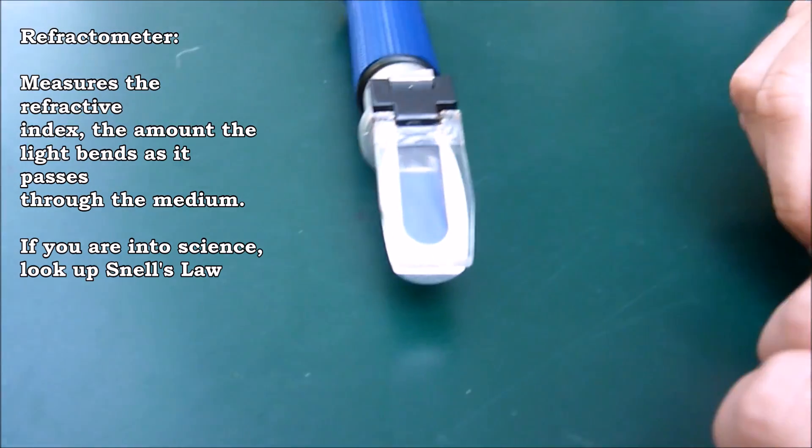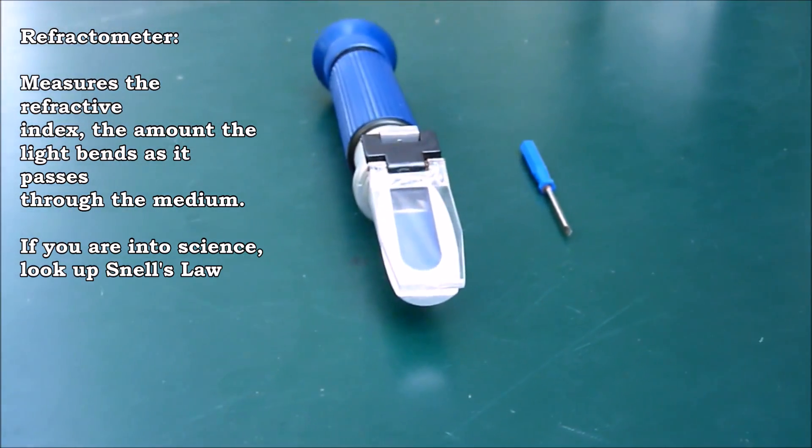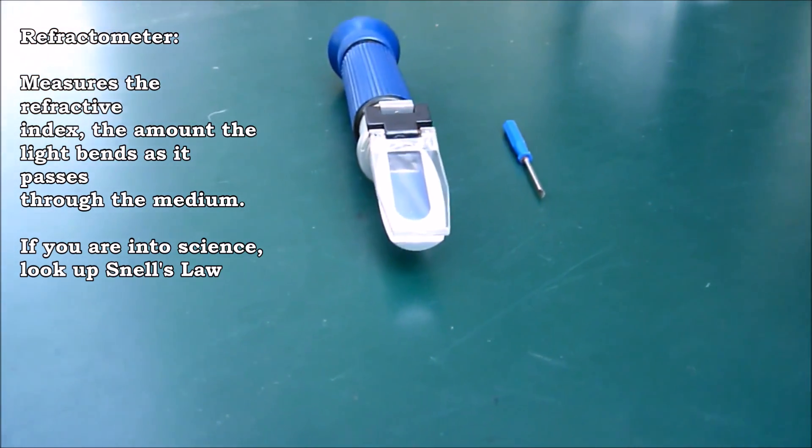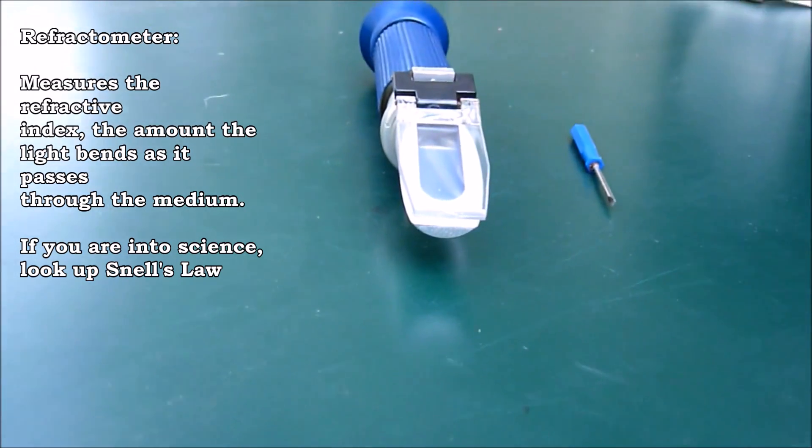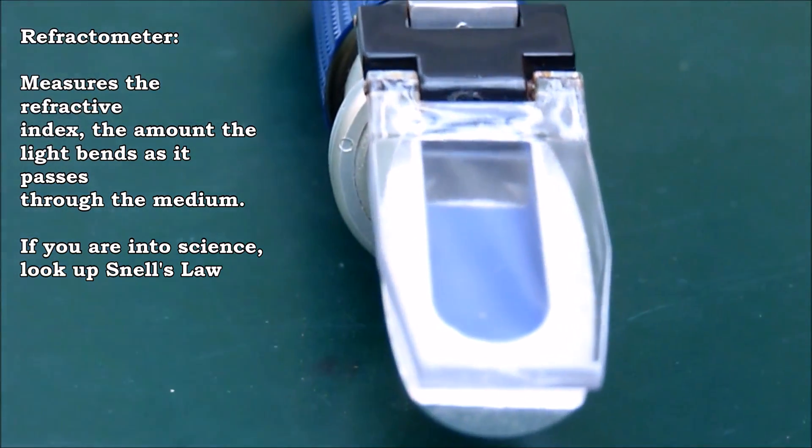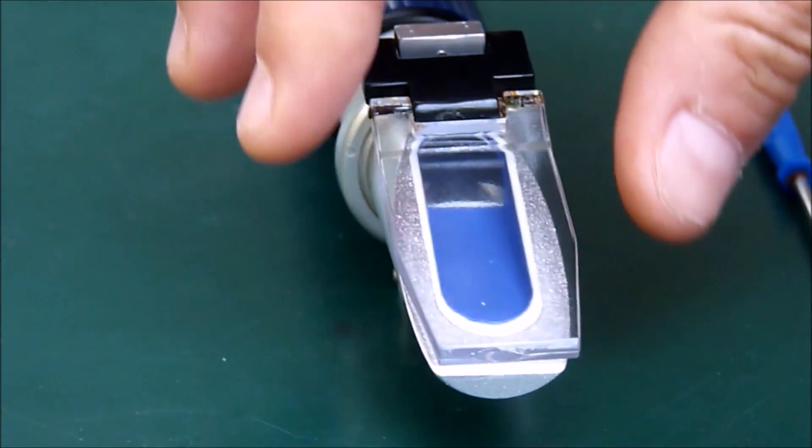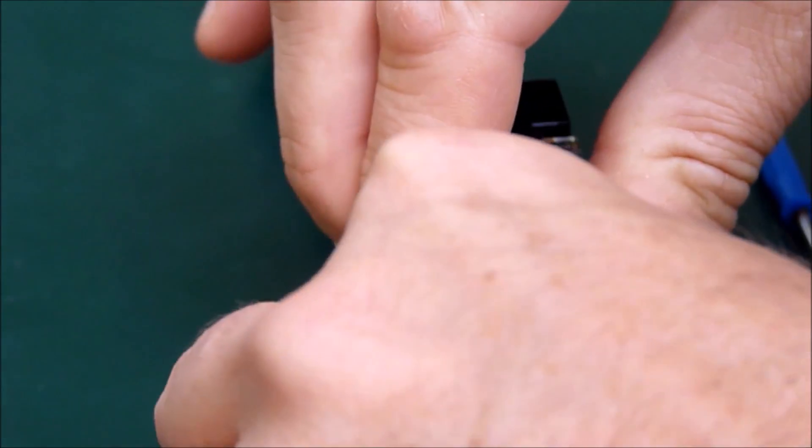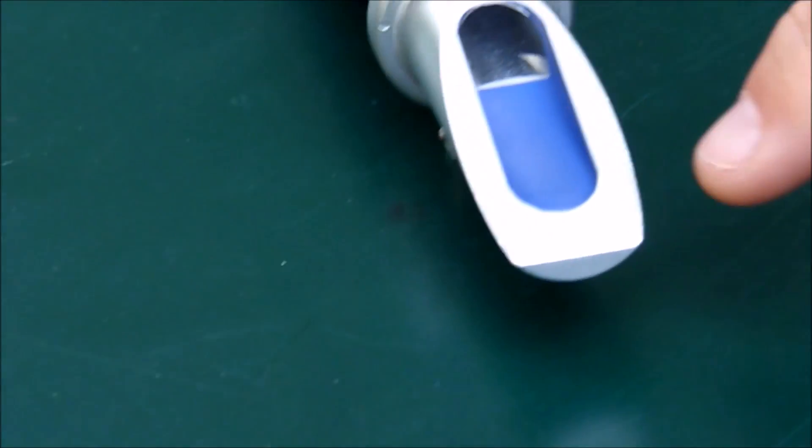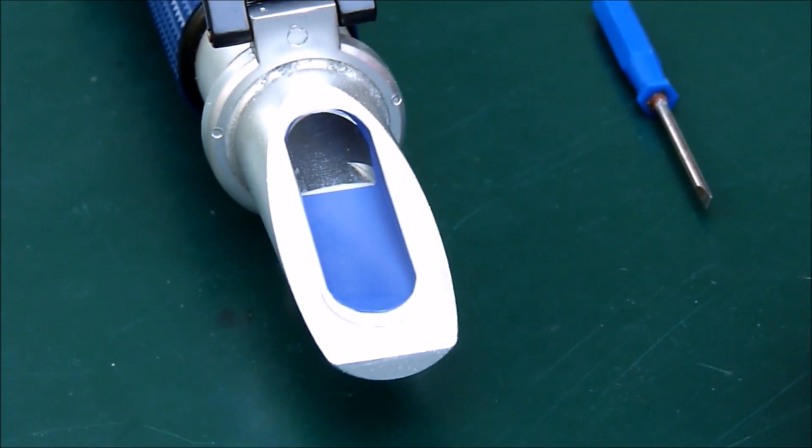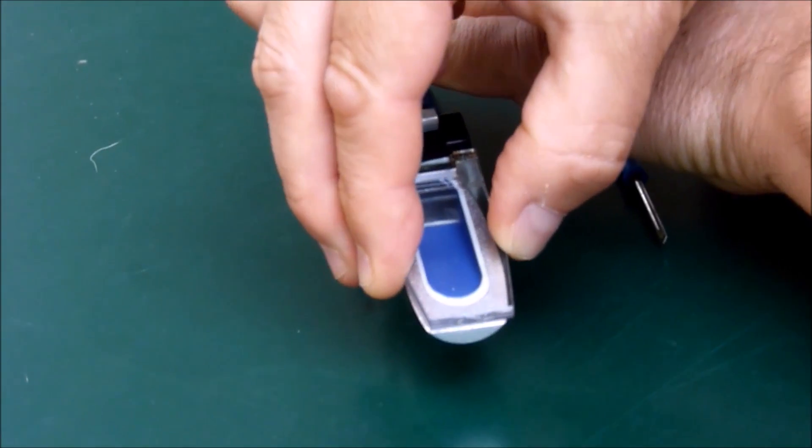So, what do we have for other options for measuring specific gravity in an aquarium? Well, what we have here is a refractometer. And, a refractometer is a much more accurate tool than the plastic hydrometer we've just shown. So, what do you do with this? You open this up. Just open this quickly. And, you put your drops of the aquarium water here. And, then you close this on it.